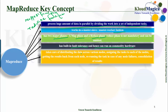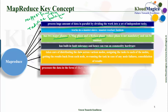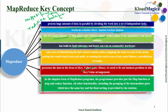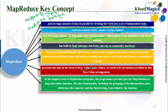MapReduce takes responsibility for data distribution across various nodes, assigning tasks to each node, getting results back from each node, and re-executing failed tasks in case of any node failures. The input data format must be application-specific and is specified by the user. The output is in the form of key-value pairs. In the simplest form, the programmer can provide just the Map function, or Map and Reduce functions. All other functionalities, including grouping of intermediate pairs and final sorting, are provided at runtime.